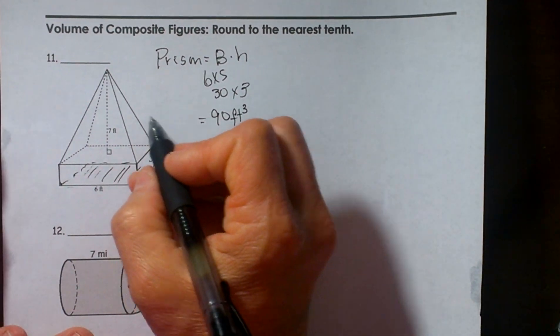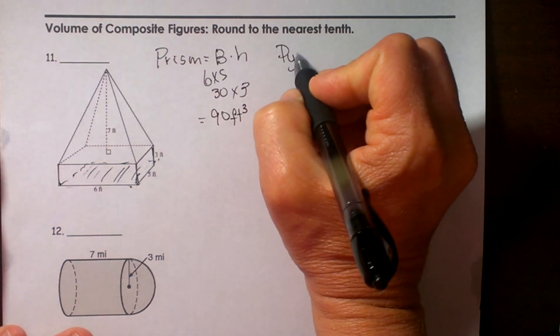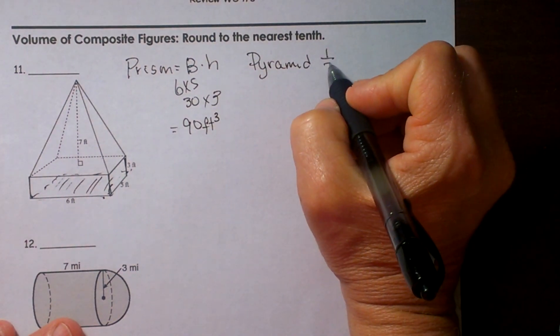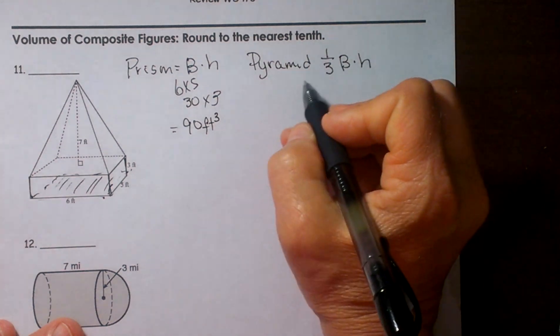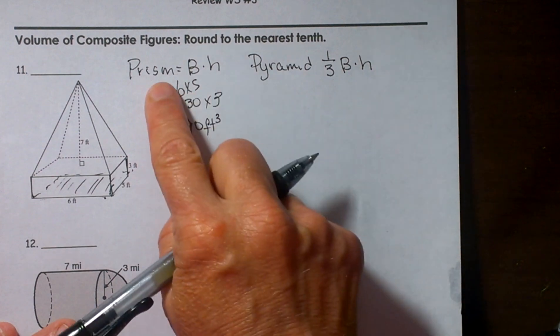Now let's look at the pyramid on top. The pyramid to find its volume is basically the same thing. We are going to take 1 third of the base area times the height. So in pyramids and cones you always take 1 third of the volume of the related prism.